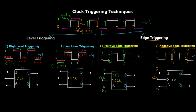So those are the four different clock triggering methodologies: high level and low level triggering under level triggering, and positive edge and negative edge triggering under edge triggering. Edge triggering is most commonly used because it keeps the flip flop active for only a few milliseconds or nanoseconds, making switching very fast.